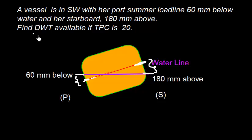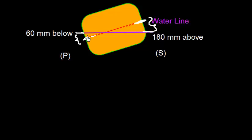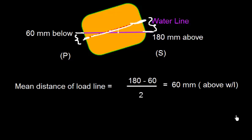In this problem we need to find the deadweight available and the TPC is given which is 20 tons per centimeter. Now we need to find the mean distance of these load line marks from the water line. So suppose this is the load line mark here. Let me mark here. So what is the distance of these load line marks? The mean distance is going to be somewhere here.